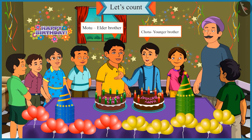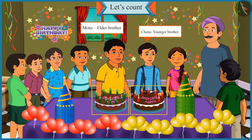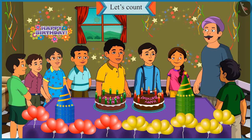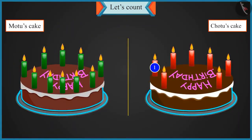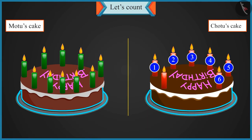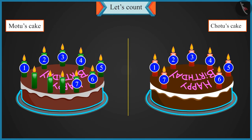Chotu, I am younger than Motu, but the number of candles on both our cakes are the same. Count the number of candles on both the cakes. It will be my one, two, three, four, five, six and seven candles. And Motu's candles are one, two, three, four, five, six and seven candles. So these are the same as my candles.